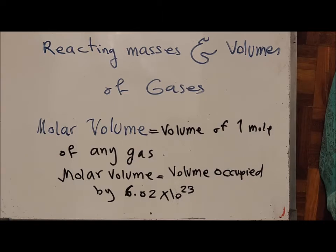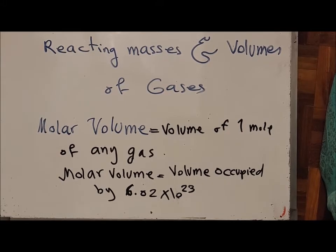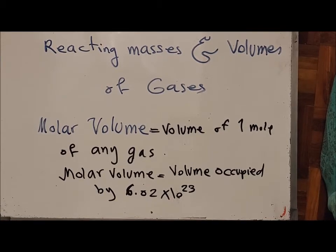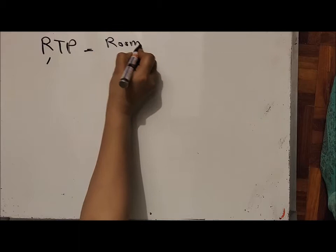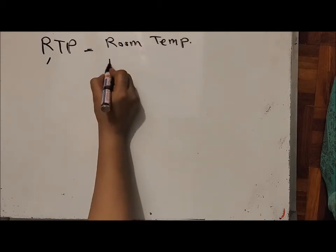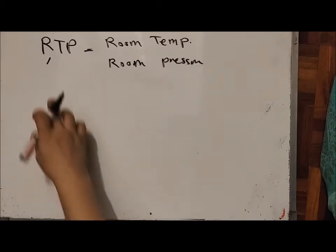For calculating molar volume of any gas, there are two different conditions we use. One is RTP and the other is STP. RTP means room temperature and pressure. The room temperature here is 25°C, which equals 298 Kelvin.